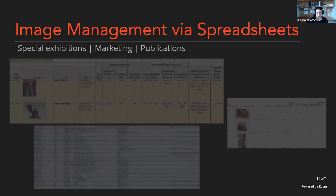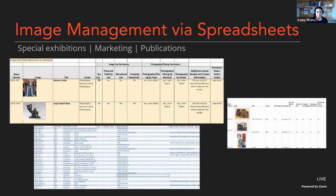Managing object image rights and permissions is complex. Here are some examples of image management spreadsheets for special exhibitions, publications, and marketing campaigns. They capture copyright, image credits, permissions, restrictions, and object tombstone information for both collection objects and loan and comparative images for publications. This kind of image management is very labor intensive, manual, and idiosyncratic, but it's really important to staff to be able to merge these disparate pieces of information together in one project workspace.